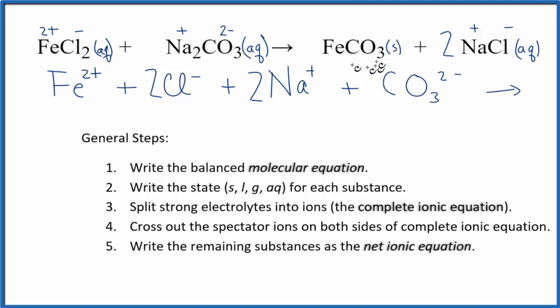On the products, we said we weren't going to split the iron carbonate up. It's a solid at the bottom of our test tube, so we'll just write FeCO3. That stays together in our ionic equation. Plus, we have two sodium ions and two of the chloride ions, 2 Cl minus. So this is what we call the complete ionic equation, sometimes the total ionic equation.